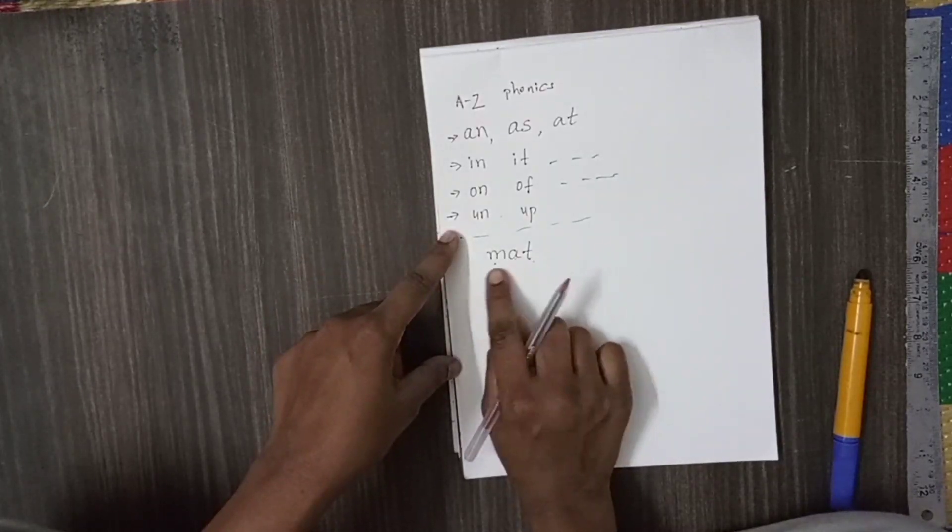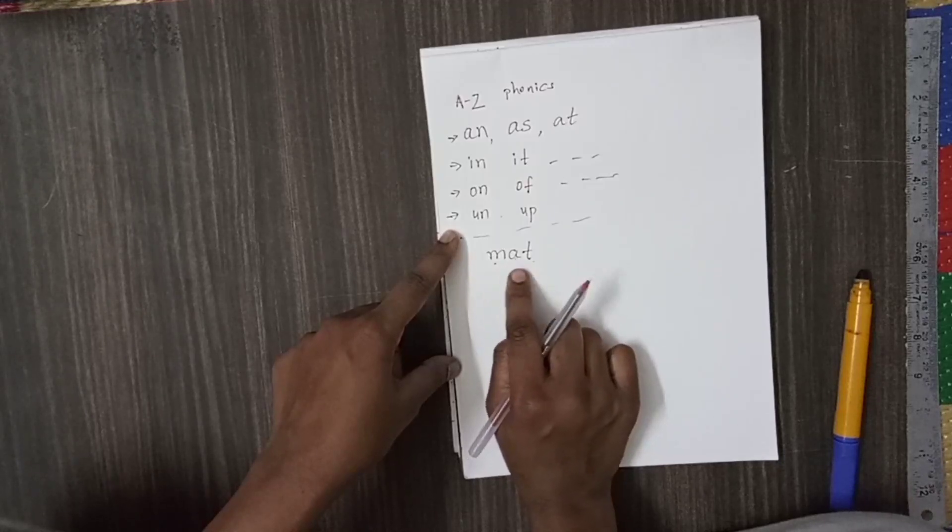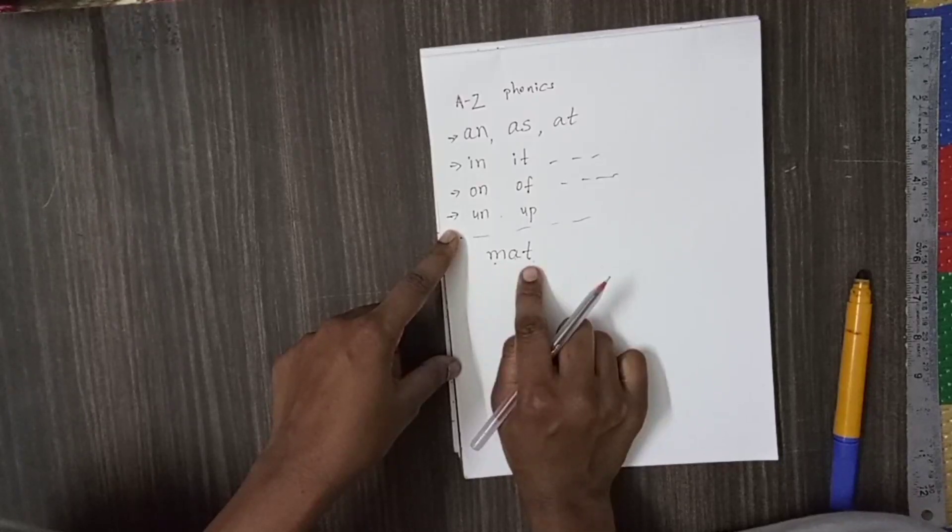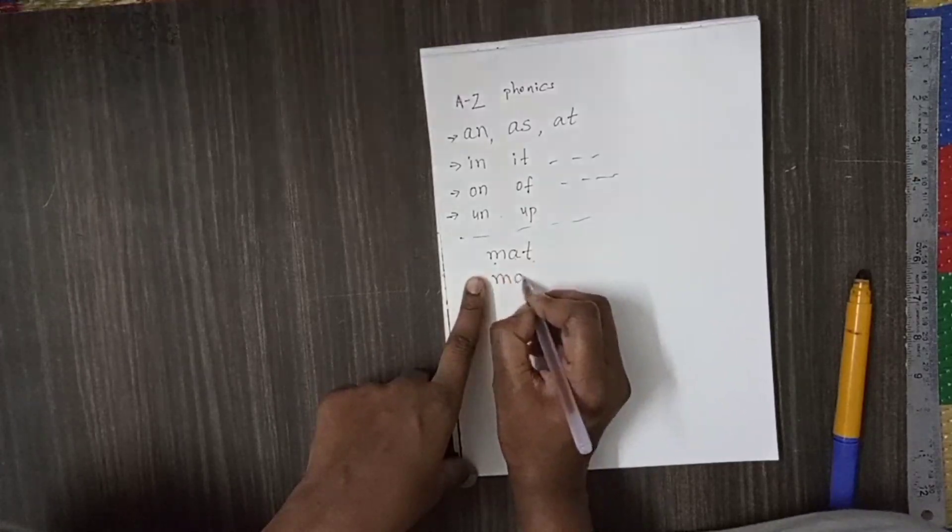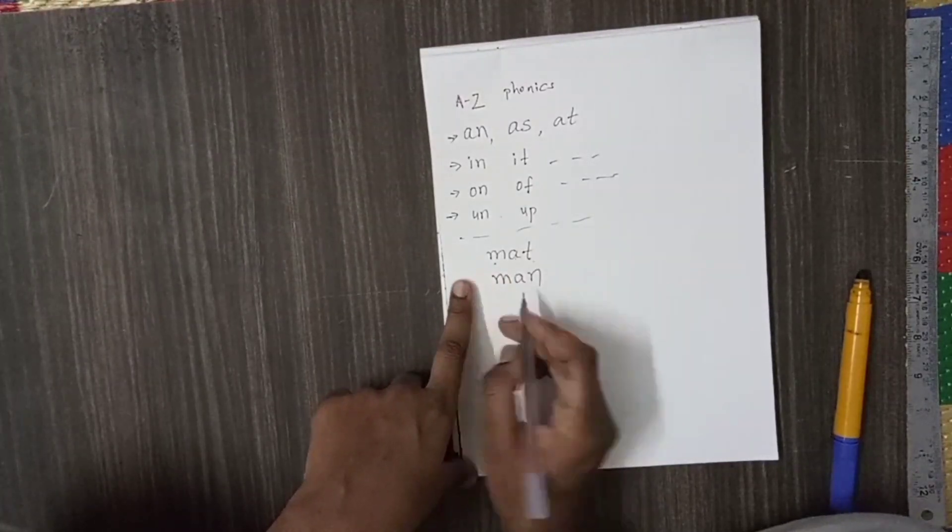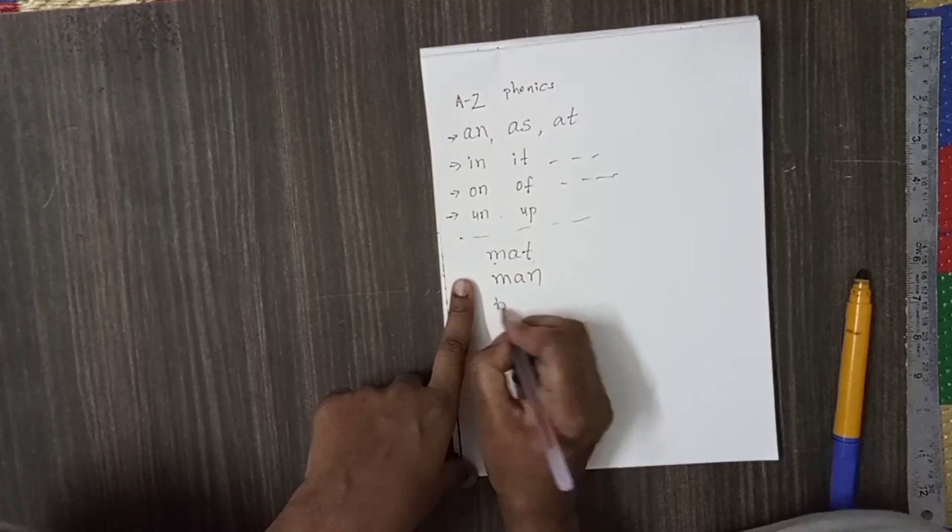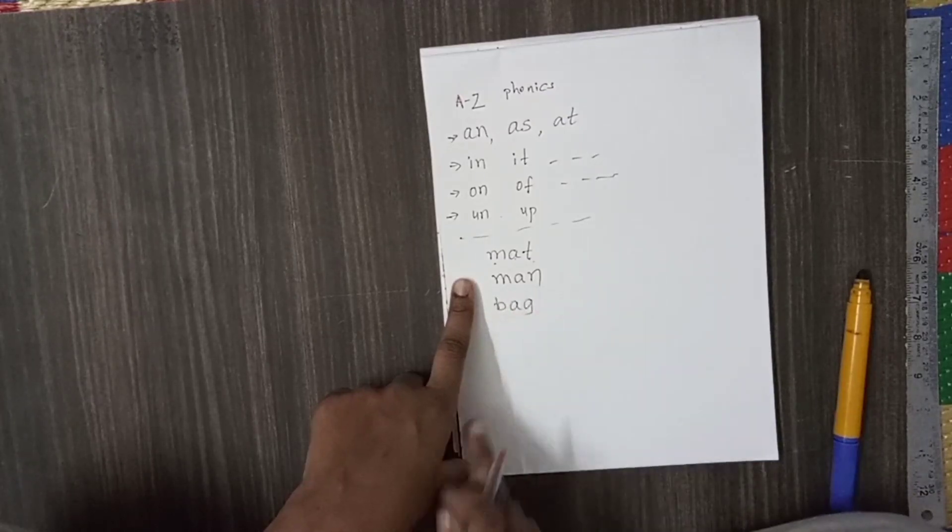So we should not give them practice like that. This point is very, very important. So keep in the mind. M, A, T, MAT. M, A, T, MAT. Like this, we should make them learn. For example, M, A, N, MAN. Next, B, A, G, BAG.